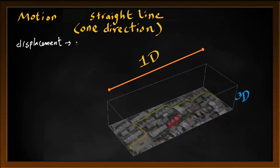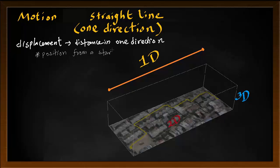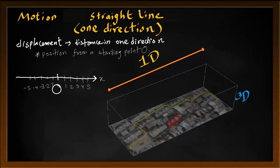Displacement is distance in one direction. More accurately, the definition we're going to use is: our position from a starting point. We are going to call that starting point O. It doesn't matter what the starting point is. Let me explain using a number line. Our starting point is O, and the symbol we use for displacement is X.